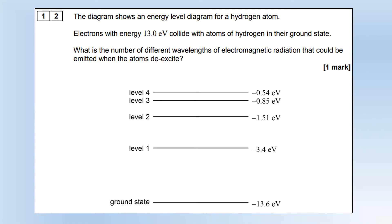The diagram shows an energy level diagram of a hydrogen atom. Electrons with energy of 13 electron volts collide with atoms of hydrogen in their ground state. What is the number of different wavelengths of electromagnetic radiation that could be emitted when the atoms de-excite? The first thing is to work out which energy level it would get excited up to. We can see the highest it could get is minus 0.6 electron volts, so it's going to go up to level 3.